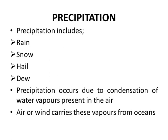Precipitation occurs due to condensation of water vapors present in the air. Air or wind carries these vapors from oceans. Precipitation میں rain, snow, hail اور dew شامل ہیں۔ Precipitation air میں موجود water vapors کی condensation سے ہوتی ہے۔ Air یا wind water bodies especially oceans سے water vapors لے کر آتی ہے۔